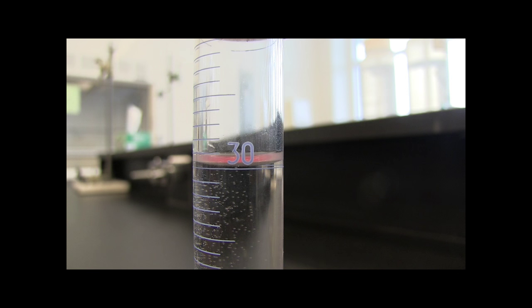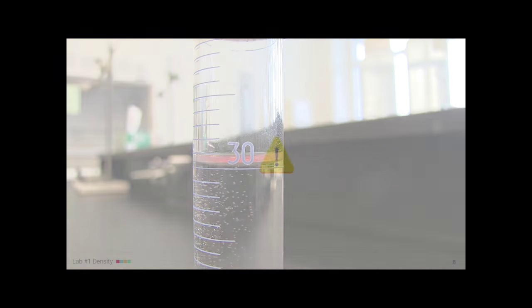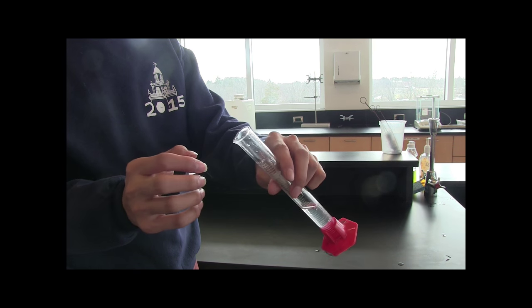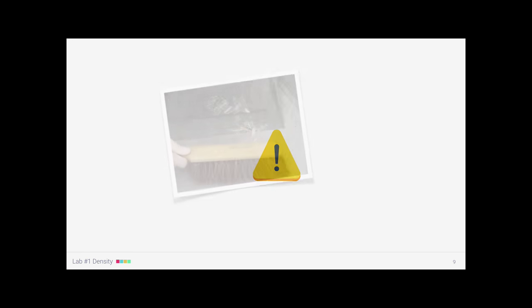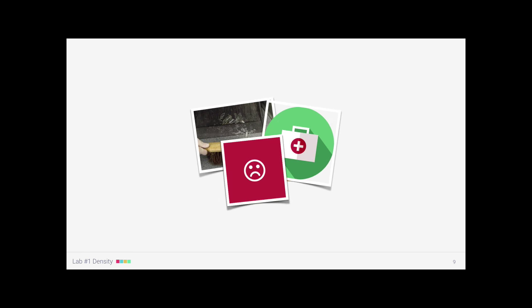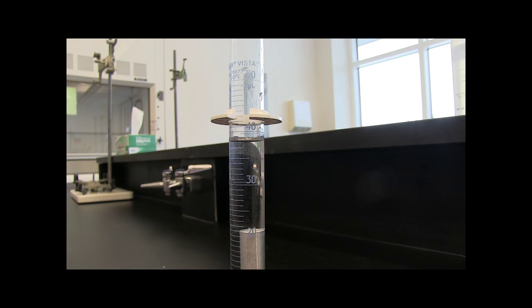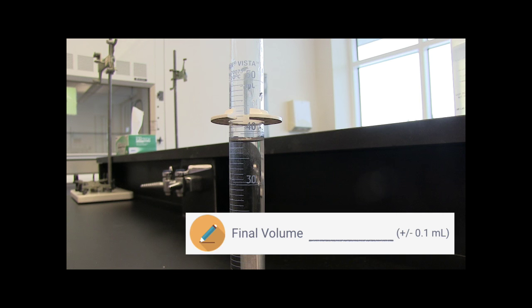Next, we need to add our solid to the cylinder. For this part, be careful. A ton of students have broken their cylinders by just dumping the solid in there. Instead, tilt the cylinder to the side and carefully let the solid slide down. Dealing with broken glassware is not fun. Now that our solid's in there, we can record our final volume. And remember, from the bottom of the meniscus.